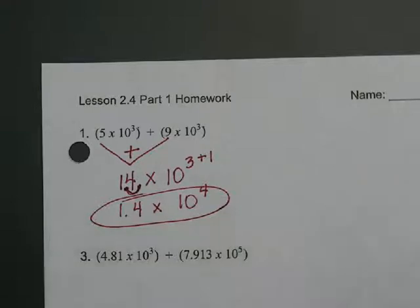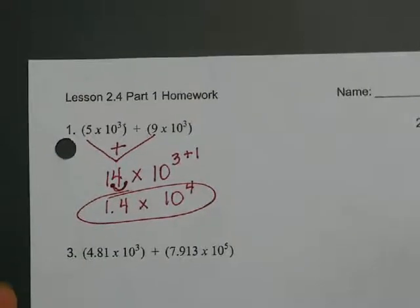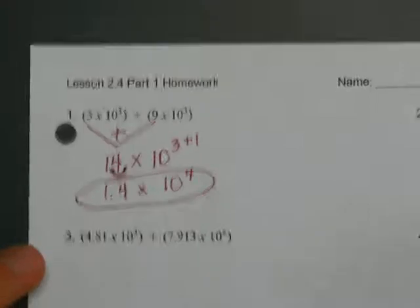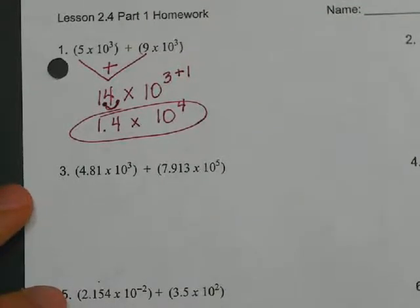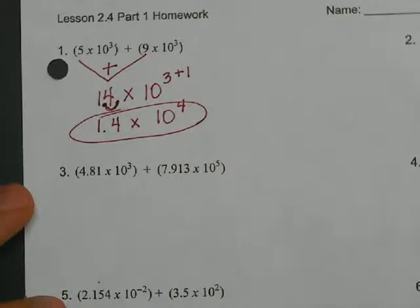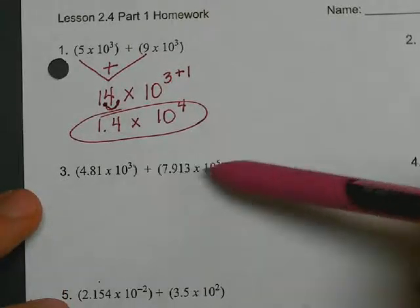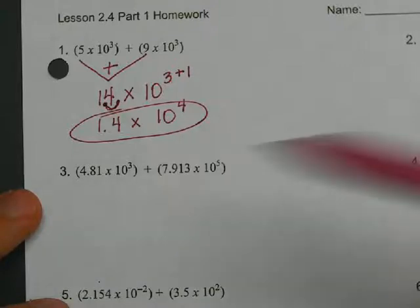And then going from there, looking at our next one, let's just look at number 3. So number 3, 4.81 times 10 cubed plus the quantity of 7.913 times 10 to the fifth power. So we ask ourselves this question, are the exponents the same? The exponents are not the same, so we make them the same.